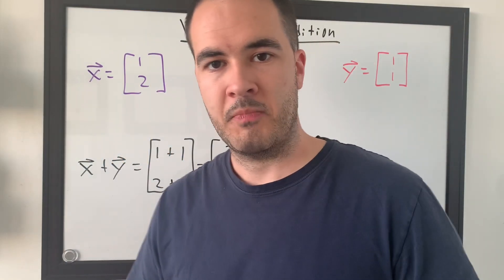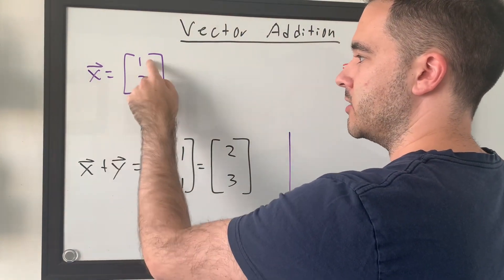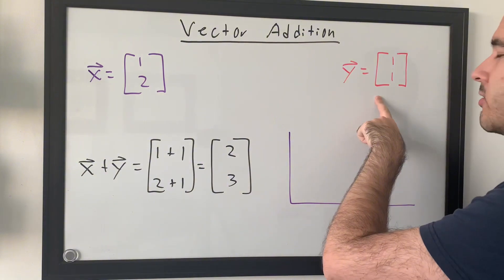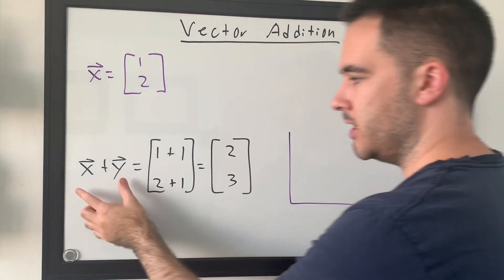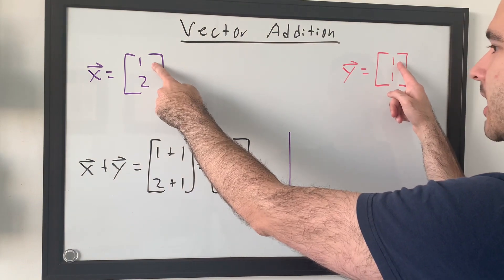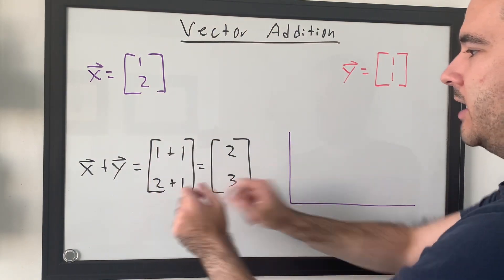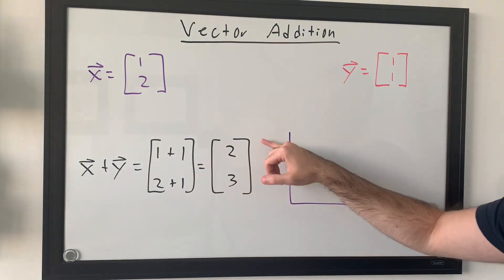Okay, so let's go through an example of this. If I give you two vectors, the first vector X is 1, 2, and the second vector Y is 1, 1, the addition of both of them is we're going to take the first element and both and add them together, and the second element and both and add them together to get a new vector, 2, 3.